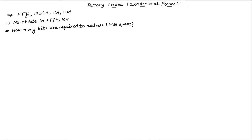In this tutorial, we are going to answer three questions. First, we will decode hexadecimal numbers into binary format. Then we will see how many bits are there in two hexadecimal numbers. The last question, which is the most important, is how many bits are required to address one megabyte of space — this answer will be used in the next tutorial on real mode memory addressing.